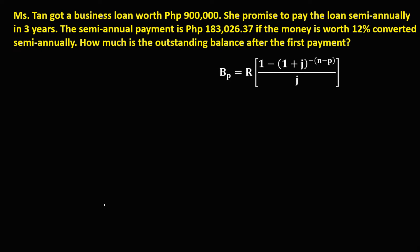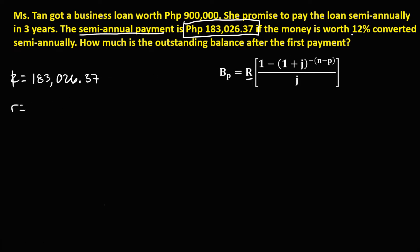Using this formula to solve the problem, we first need to list all the given. For R, the regular payment, we have the semi-annual payment of 183,026.37. For the rate, since 12% converted semi-annually, the rate is 12%, or 0.12 in decimal. And for the time, since she promised to pay the loan semi-annually in 3 years, the time is equal to 3.